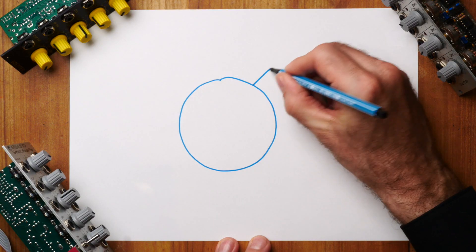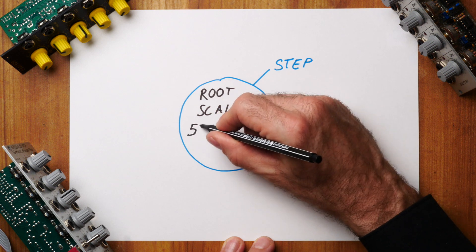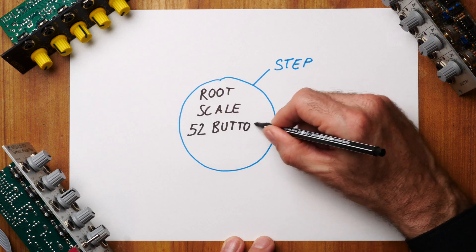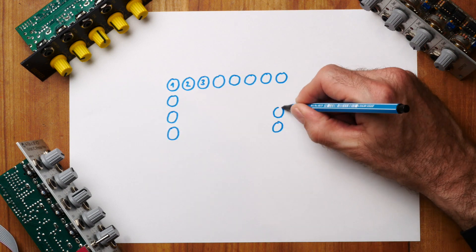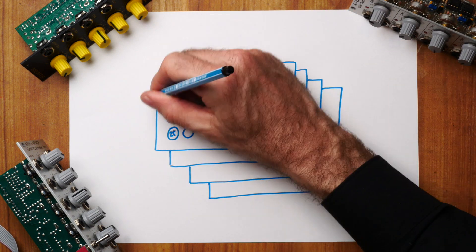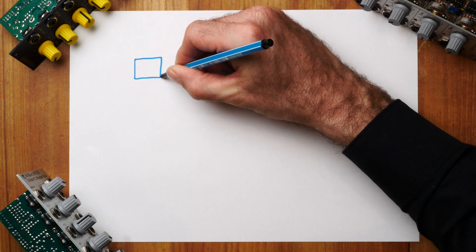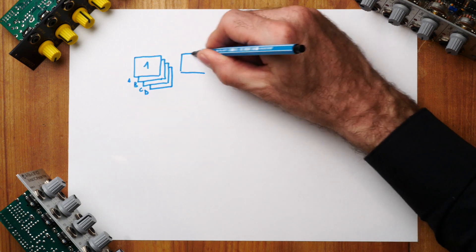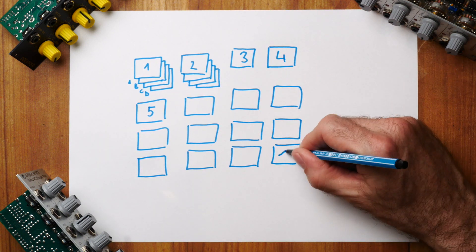I promised to explain song parts — here is how everything works in detail. The smallest element is called a step. A step consists of a root note and a scale. It also keeps memory of the settings of all 52 buttons of the playing area, so these can be sequenced as well. It has a length measured in beats. You can arrange up to 32 such steps into a sequence called a song part. Each song is made up of four parts: A, B, C, and D. The Sinfonion has 16 songs — that's 64 song parts and 2048 steps in total.